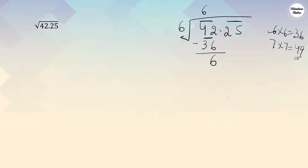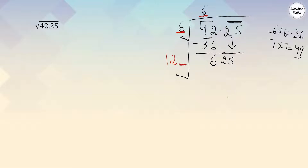We subtract 36 from 42 and get 6. Now bring down the next pair — since there's a bar on 25, we bring down 25 together. For the next divisor, we add the quotient 6 to the divisor 6, giving 12. Now we need to find a digit to write after 12 such that when we multiply 12-something by that digit, we get close to 625. If we try 4: 124×4=496, which is small.